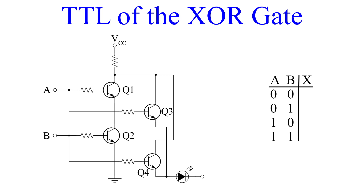Now we have the XOR schematic. This is a bit more complicated than the others, but let's follow the current and see if this works the way we want. With VCC applied and inputs A and B both 0, none of the transistors have a base bias, so current cannot flow through any of them. This leaves our LED turned off, and we have an output of 0.